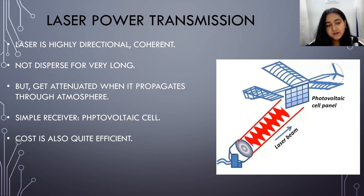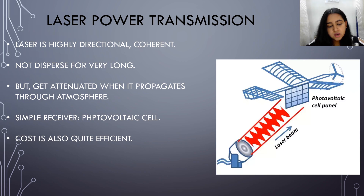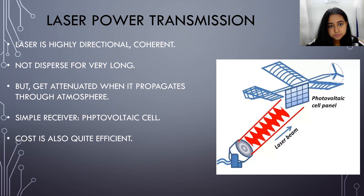Laser power transmission: laser is highly directional and coherent, and does not disperse over very long distances, but does get attenuated when propagating through the atmosphere. The receiver is a simple photovoltaic cell, and the cost is also quite efficient.